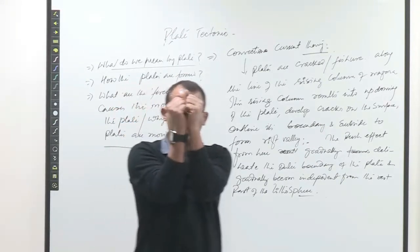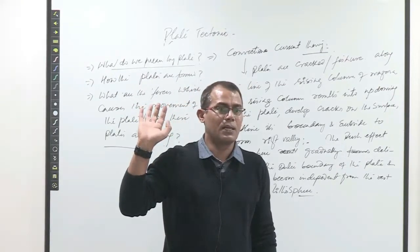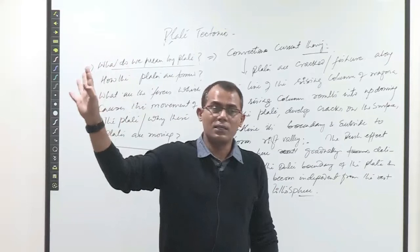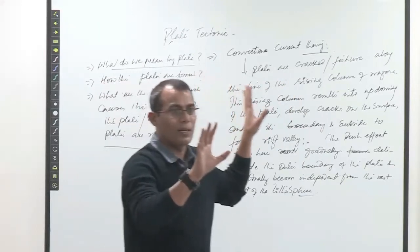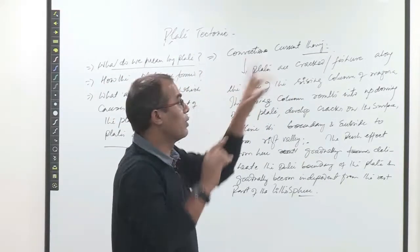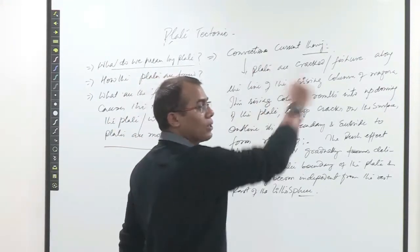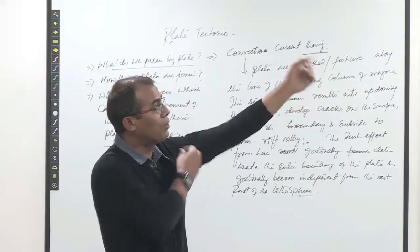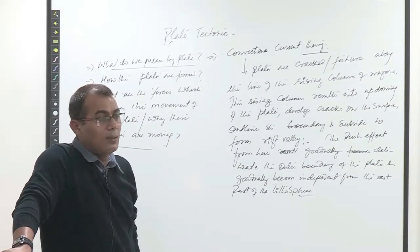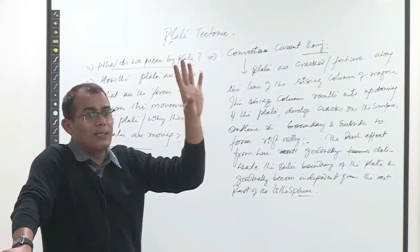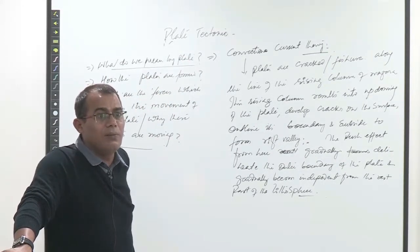When the magma continues to come upward, it keeps pushing. Imagine only one part has developed a crack and the rest is attached. When magma keeps pushing from side to side, cracks gradually develop in that direction too. That is how side walls are generated and a plate is independently created from the mid-oceanic ridge, and that is how the ridge develops.